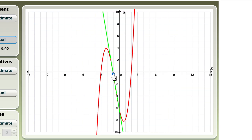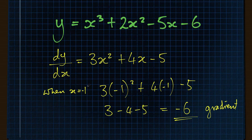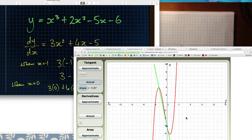Let's look at one more example — what happens to the gradient when x equals 0. Feeding in x equals 0, we get 3 lots of 0 plus 4 lots of 0 minus 5, which is minus 5. Again a negative gradient, but not quite as steep as it was when x was minus 1, when it was minus 6. The gradient did get steeper at x equals minus 1.